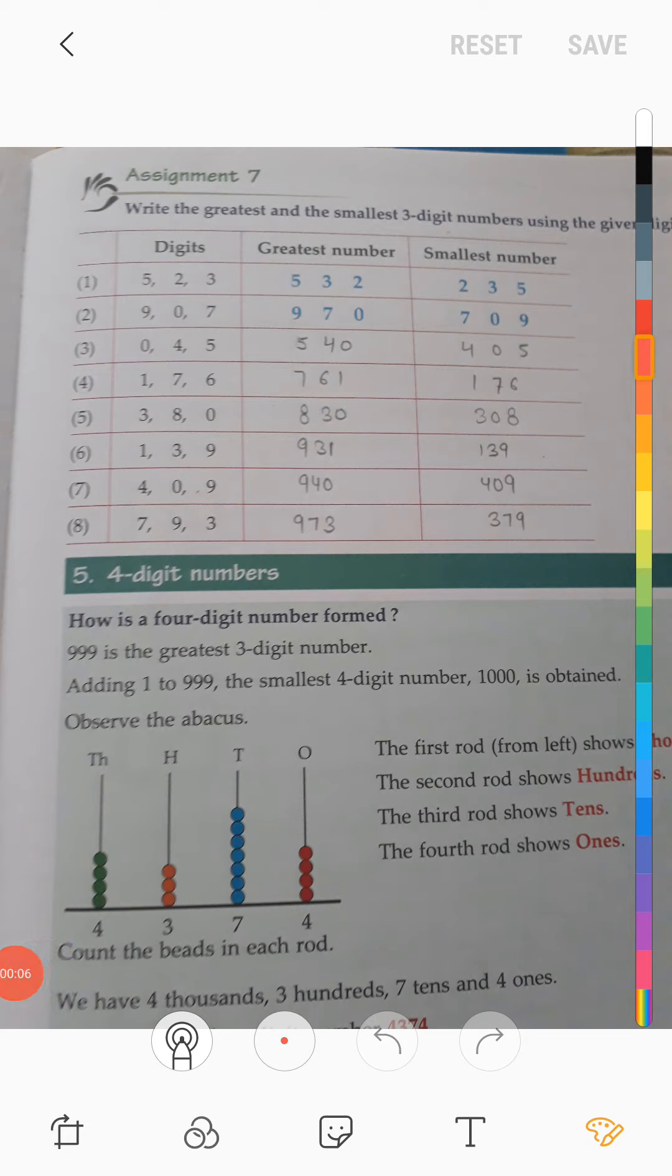Hello students, today we are going to do book exercise of chapter 1st of maths subject of class 3rd, page number 11, assignment 7. Write the greatest and the smallest 3-digit numbers using the given digits.